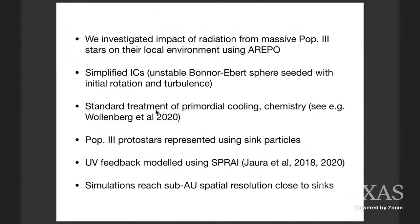We wanted to investigate the impact of radiation on the disk in more detail. So what we did a couple of years ago was start carrying out a series of simulations of this using the AREPO moving mesh code. The basic setup we're using here is we're starting with simplified initial conditions. We start with an unstable Bonner-Ebert sphere with a mass of a few thousand solar masses and an initial density at the center of a few times 10^4 particles per centimeter cubed. We give it some initial rotation and a small level of turbulence, and then follow its gravitational collapse and see what happens. We're using the standard treatment of primordial cooling and chemistry.